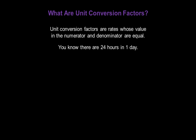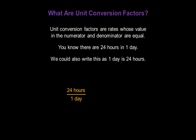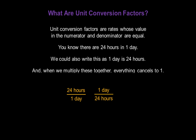For example, you know there are 24 hours in one day. We could set that up as a rate by writing 24 hours over one day. Of course, we could also write this as one day over 24 hours. Both of these are equal. And when we multiply these two rates together, everything will cancel to one. 24 hours in the numerator cancels 24 hours in the denominator, and one day in the numerator cancels one day in the denominator. Everything becomes one.